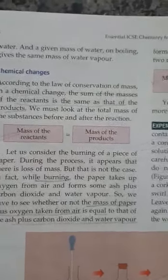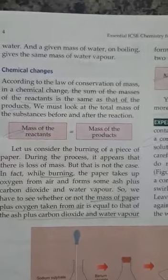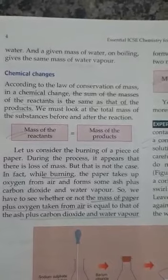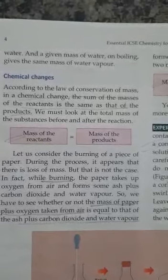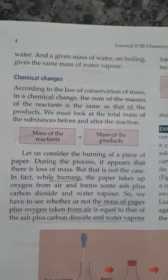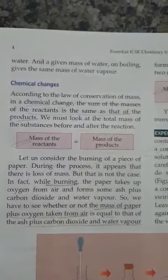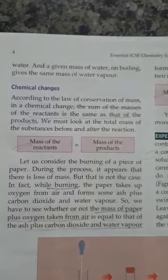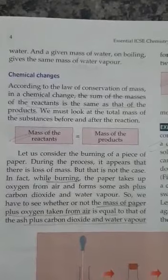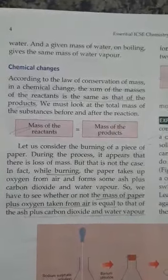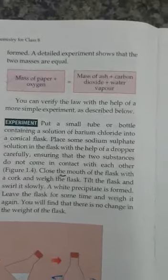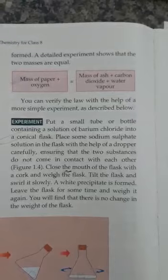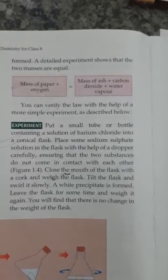For example, burning a piece of paper. During this process the paper takes oxygen from the air and forms ash, carbon dioxide, and water vapor. So the total mass of paper plus oxygen taken from the air equals the mass of ash plus carbon dioxide and water vapor. This shows that chemical change obeys the law of conservation of mass.